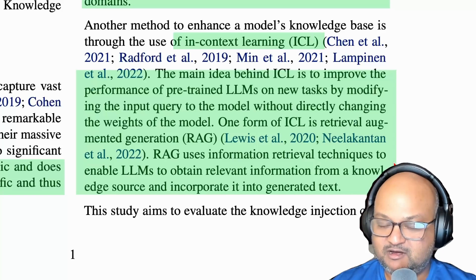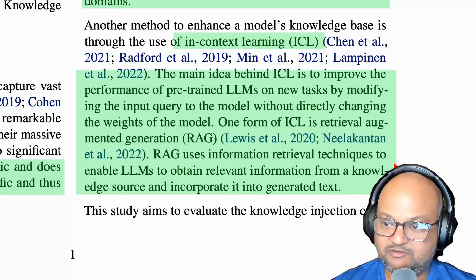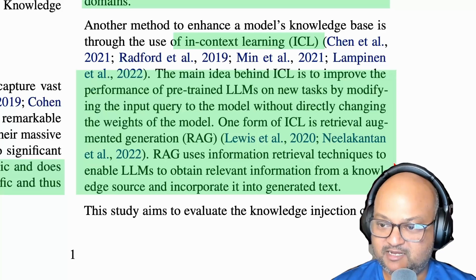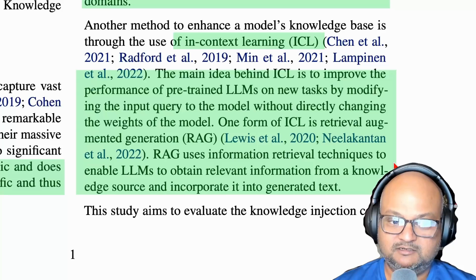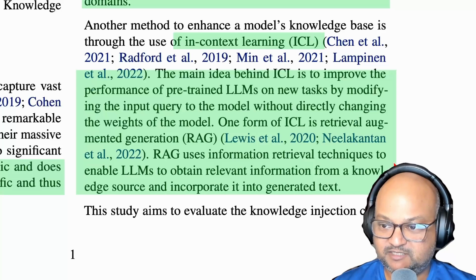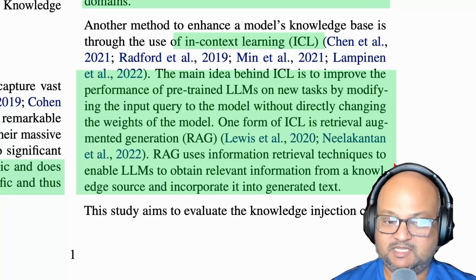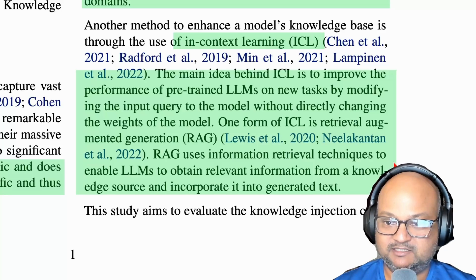The other big class of techniques is called in-context learning, and the now familiar RAG or retrieval augmented generation is the main technique within that class. The way RAG or in-context learning works is that you don't really change your pre-trained model, but you provide it additional domain-specific or query-specific context that the model can then use to synthesize its answer.